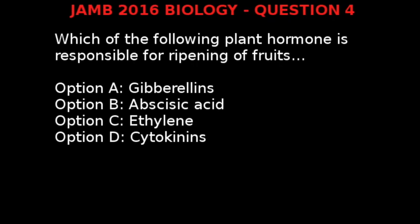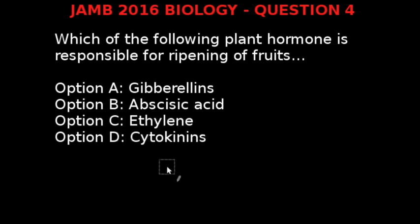JAM 2016 Biology Question 4. Which of the following plant hormones is responsible for the ripening of fruits? The options include: Auxin, Cytokinin, Gibberellin, Abscisic Acid, and Ethylene.